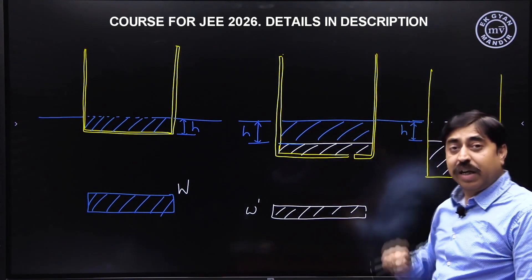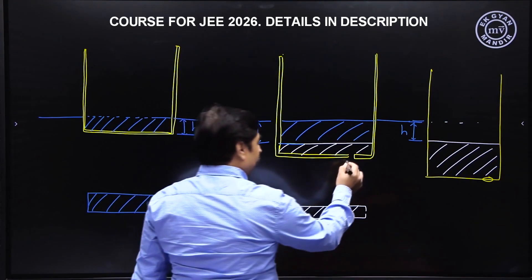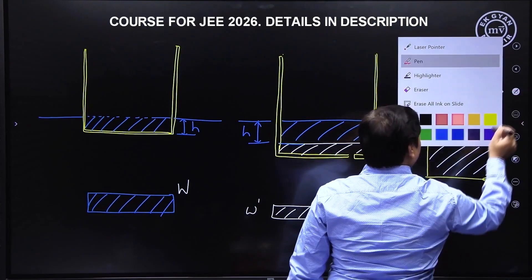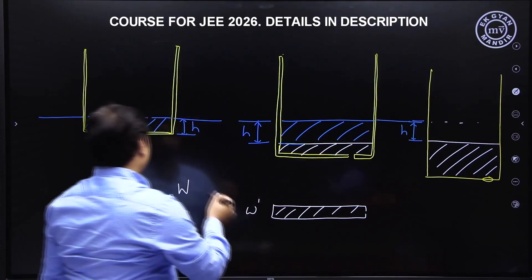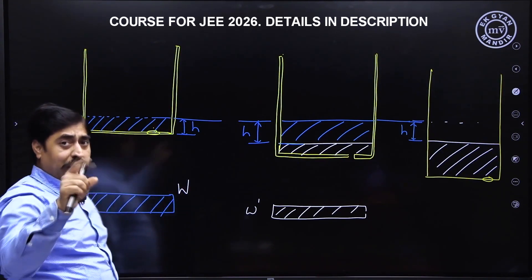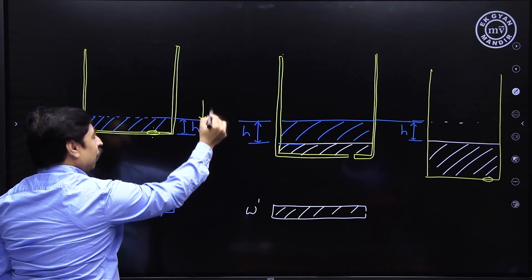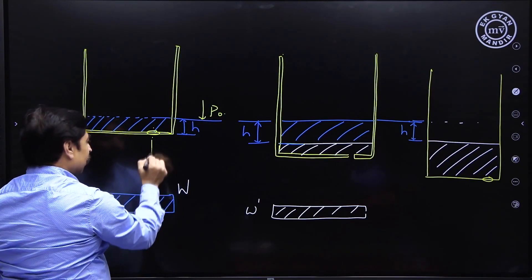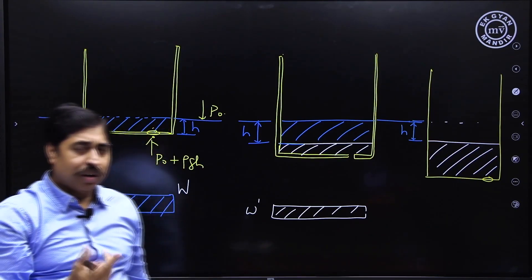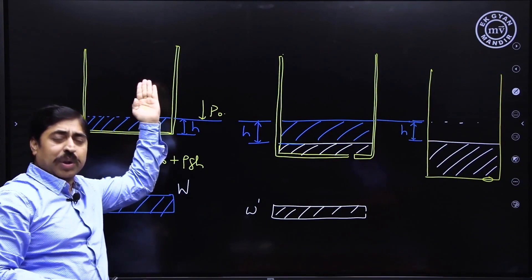The rate at which water enters the boat depends — from Bernoulli's equation — on the pressure difference between the point just outside the hole and the point just inside. When the boat is completely empty, it is all air inside at atmospheric pressure P₀. Outside at the hole, the pressure is P₀ + ρgh. So the pressure difference is ρgh, and this difference drives water into the boat.